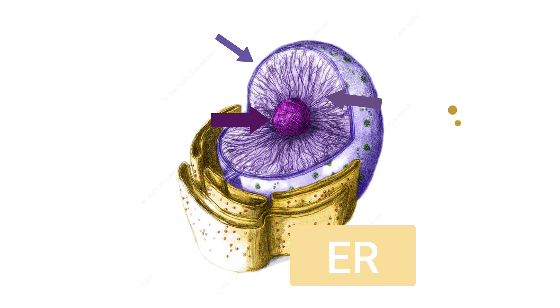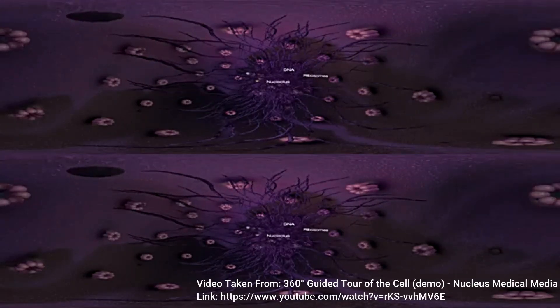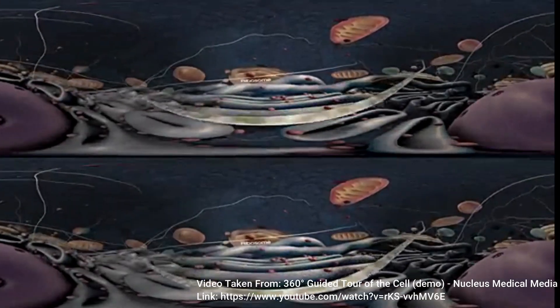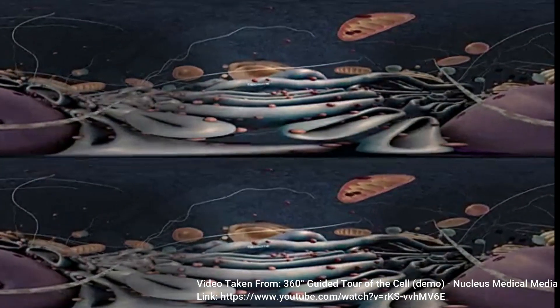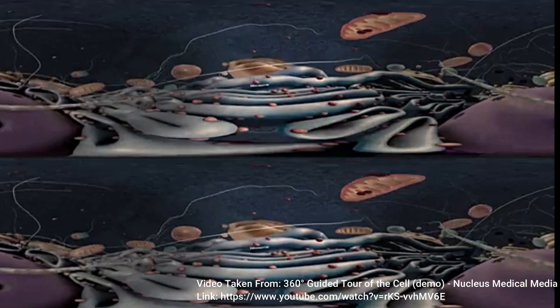When the cell splits, this chromatin will coil up and form chromosomes. Once the nucleus makes ribosomes, these ribosomes will leave the nucleus and start to make proteins. The ribosomes may float around the cell in the cytoplasm or they can bind to the rough endoplasmic reticulum.